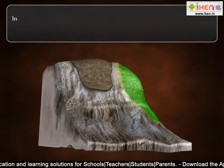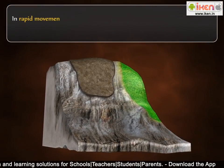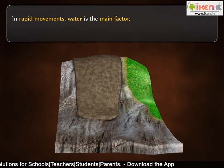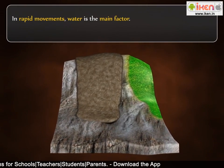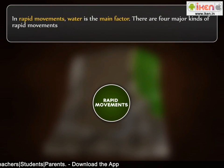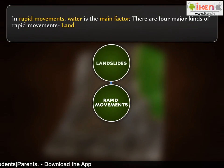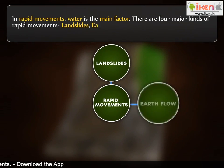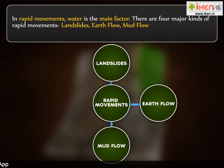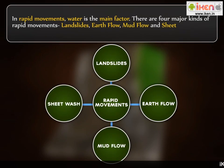In rapid movements, water is the main factor. There are four major kinds of rapid movements: landslides, earth flow, mud flow, and sheet wash.